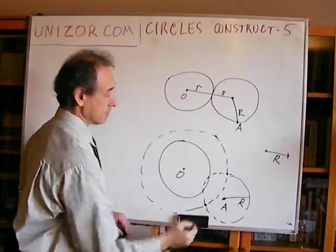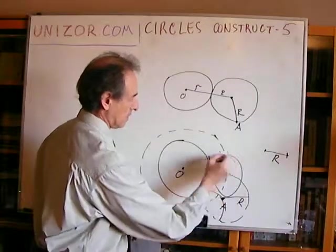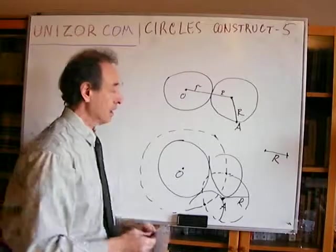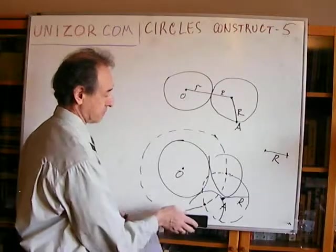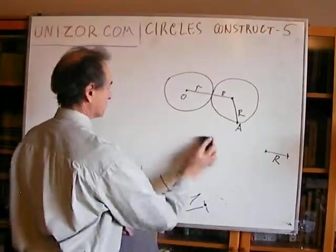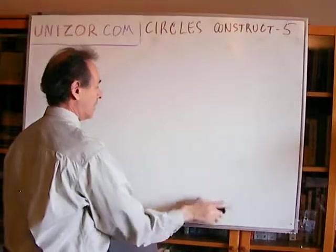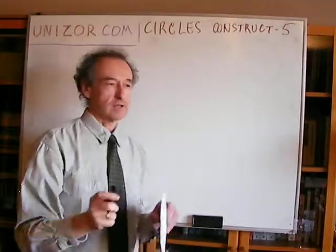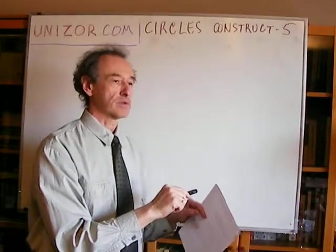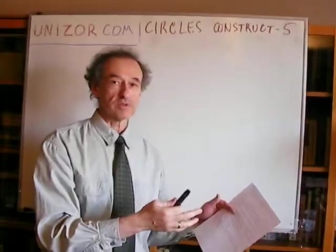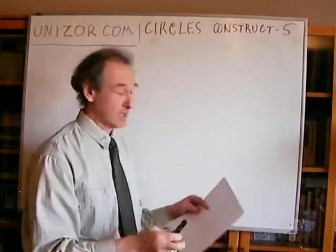Both intersection points work — the circle at each location will be tangent to the given circle and pass through point A. Many of these problems look very much alike; the only small distinction is whether your circle must pass through a point, have a given radius, or be tangent to a line — just different combinations of conditions.